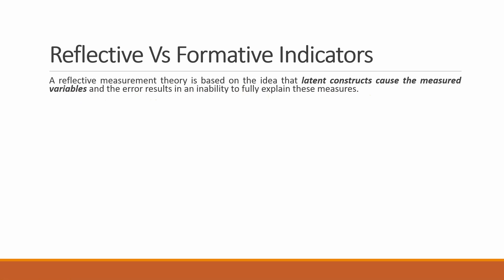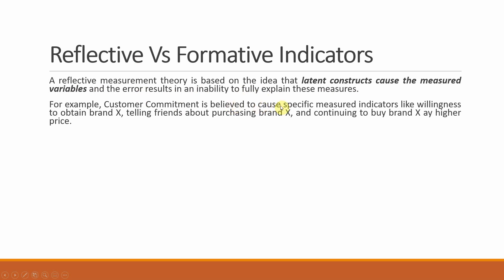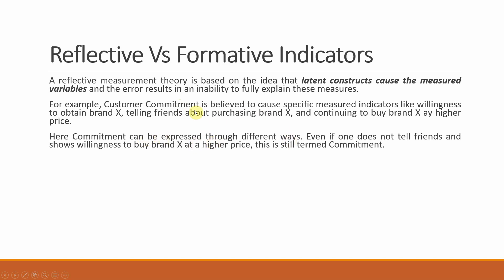A reflective measurement theory is based on the idea that latent constructs cause the measured variables, and error results in an inability to fully explain these measures — arrows flow from the latent construct to the indicators. For example, customer commitment causes specific measured indicators: willingness to obtain brand X, telling friends about purchasing brand X, and continuing to buy brand X at a higher price. Even if we remove one of these indicators, the remaining two still tell us about customer commitment, so removing one item does not invalidate the scale.